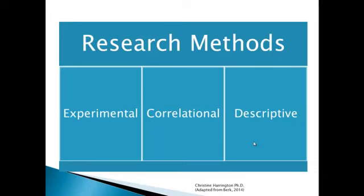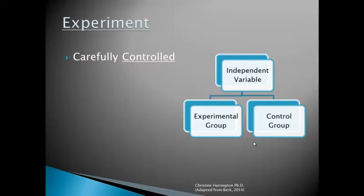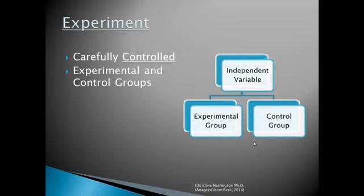I do want to spend a little bit of time on research methods. Students often struggle with differentiating between different types of research studies, and I think it's really important to do so. You'll notice that I'll be asking you to dive into the library databases and find research studies, and I want you to be able to interpret them appropriately by knowing what type of study they are. The three main types I'm going to refer to are the experimental, correlational, and descriptive methods. The experiment is really the best way to do research in most cases because it's a very carefully controlled situation, with experimental groups and control groups.